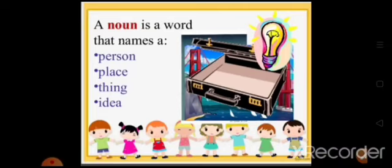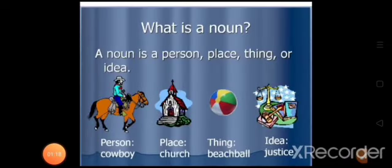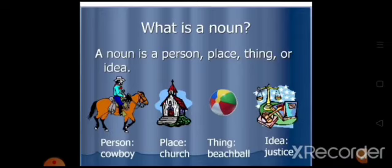The definition of a noun: a noun is a word that names a person, place, thing and idea. A noun is a word used as the name of a person, place or thing. As Akbar was a great king, Kolkata is on the banks of the river Hooghly. Here Akbar is a proper noun and Kolkata is a city, so it is also a noun. So what is a noun? A noun is a person, place, thing or idea.